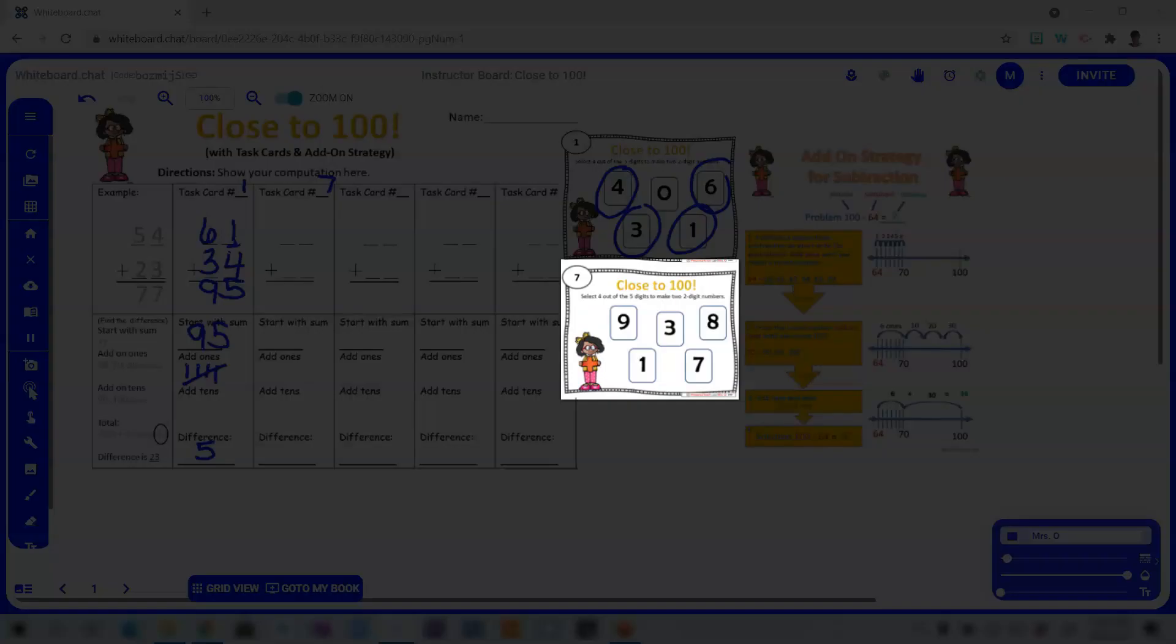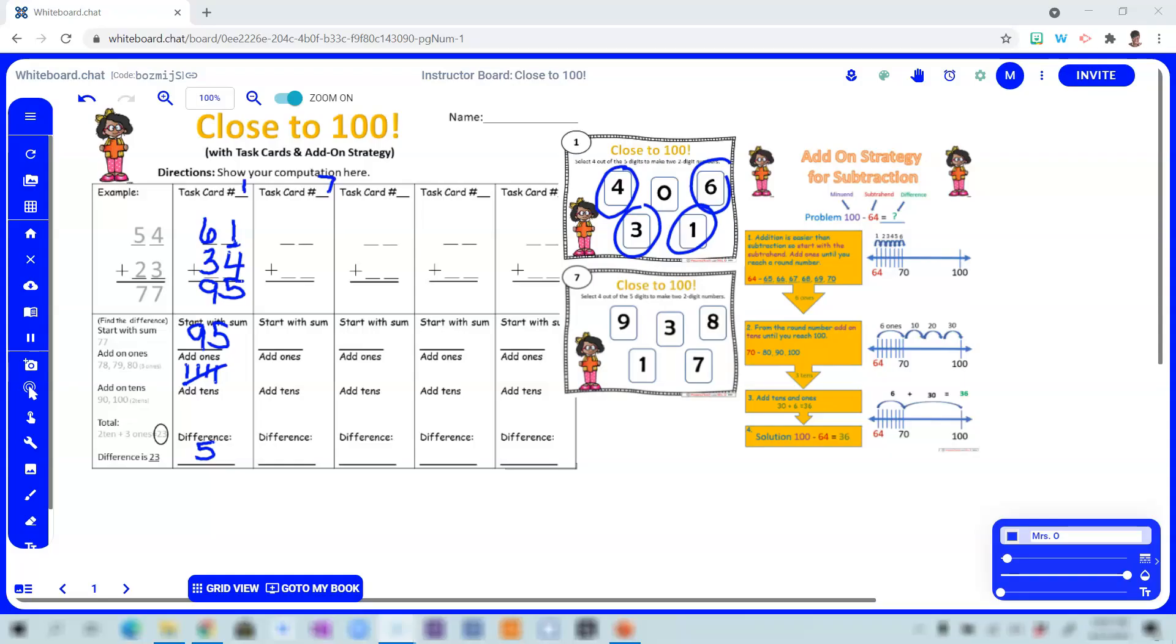Trying another example, we're going to be using task card number seven. Again, students want to give attention to the tens place, determining which digits will get them closest to 100. So thinking in terms of 10, you have a 9, a 1, 3, 7, and 8. Again, it's easy to put together the 9 and 1 and put that in the tens place.